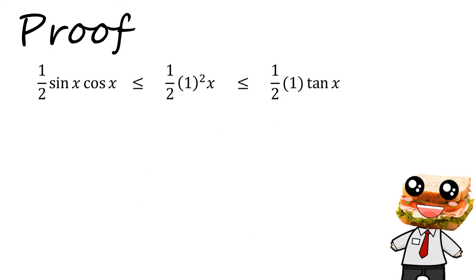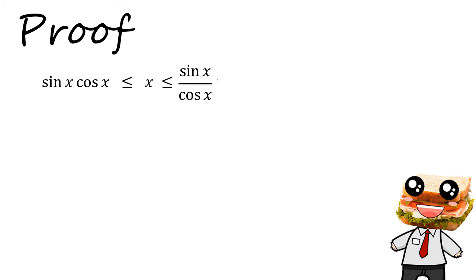Now we can simplify this inequality further by dividing the common factor of half across all the three terms. Next we can replace tangent x with the identity of sin x over cosine x. Now we can divide throughout by sin x. And this will give us cosine x is less than or equals to x over sin x, which is less than or equals to 1 over cosine x.